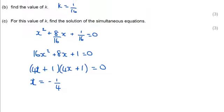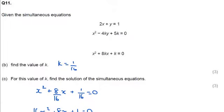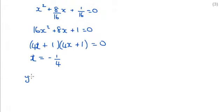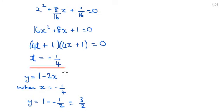We need to go back and find y, and we know that y = 1 - 2x. So when x = -1/4, y = 1 - (-1/2) = 3/2. So that's our solution: x = -1/4 and y = 3/2.